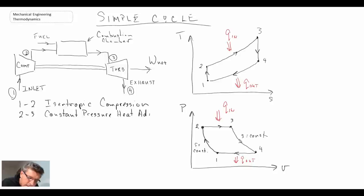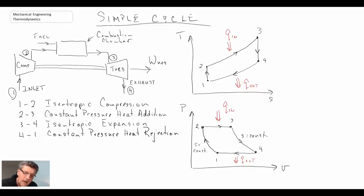And that's in our combustion chamber. And then finally four through one, that's where we are doing heat rejection. And we will consider that to be constant pressure heat rejection. So that is the simple Brayton cycle.